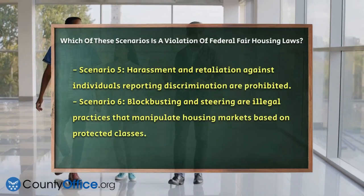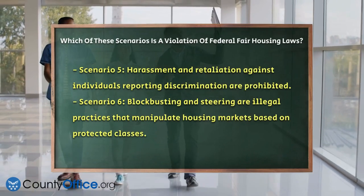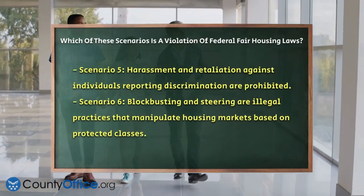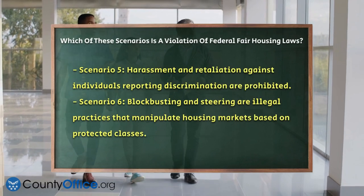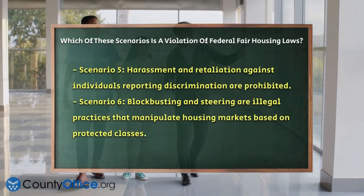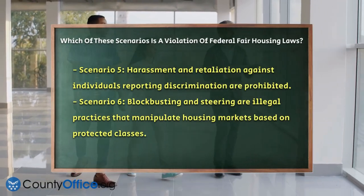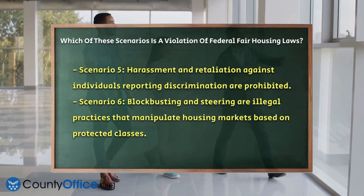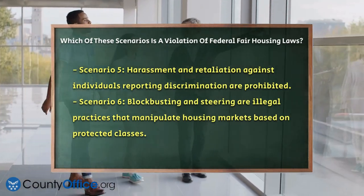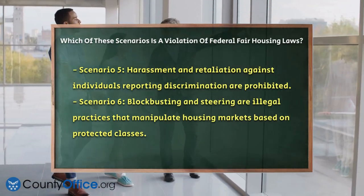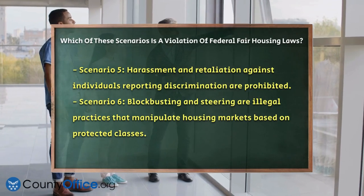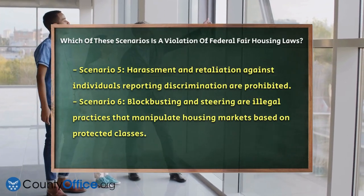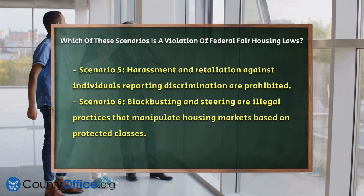Scenario 4: Unequal mortgage lending terms. Mortgage lenders cannot impose higher interest rates or offer loans with unfavorable terms based on a borrower's race, sex, or national origin. For example, charging higher interest rates for home loans in predominantly Latino neighborhoods compared to predominantly white areas is a violation.